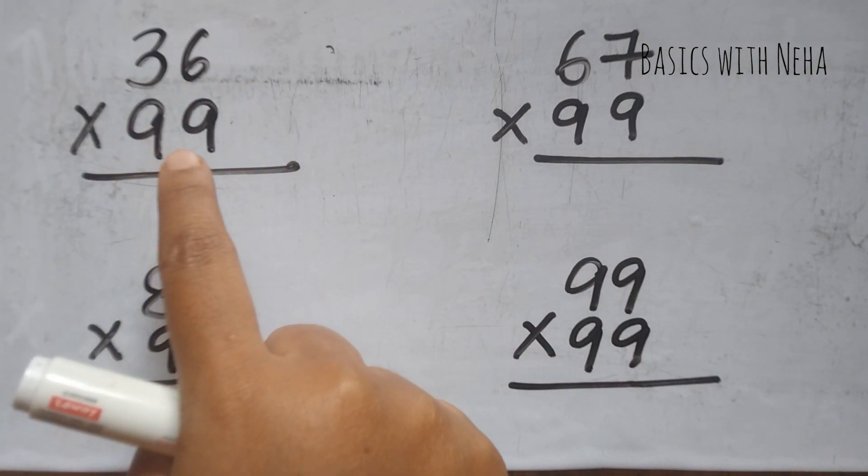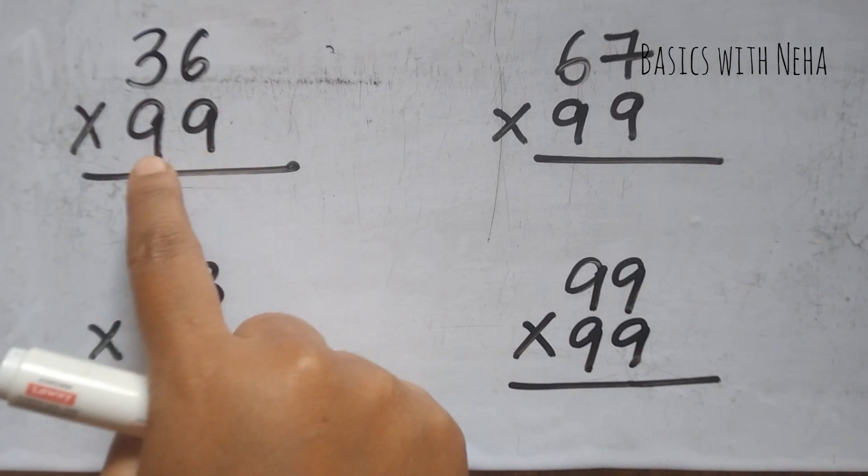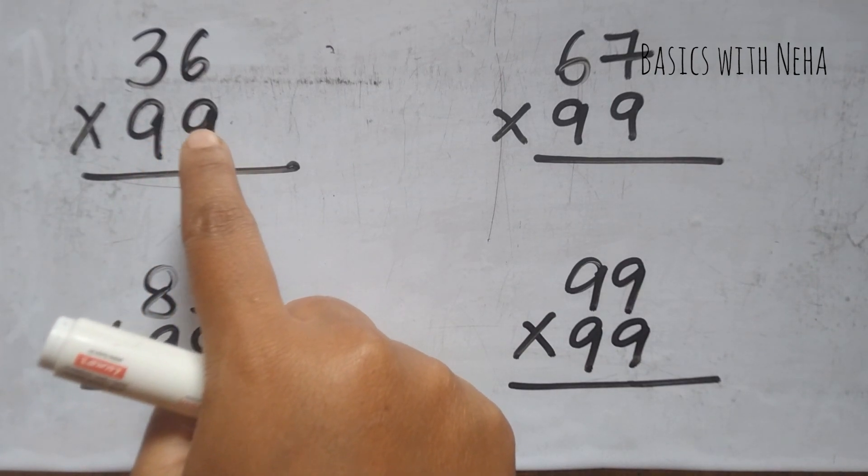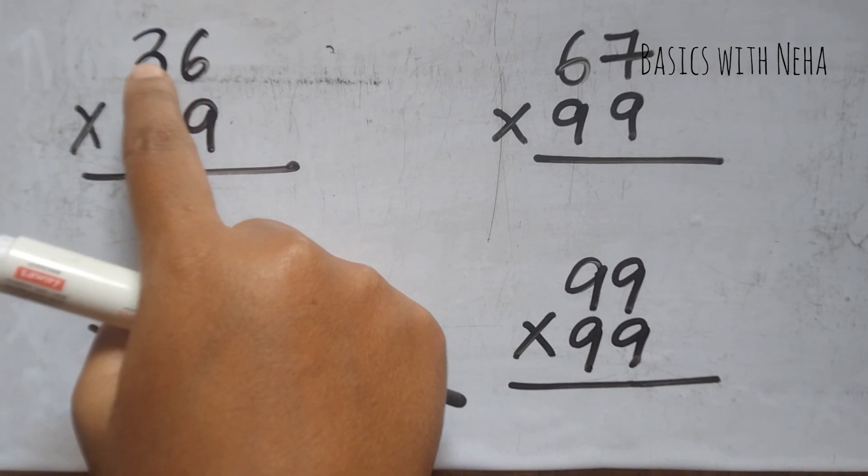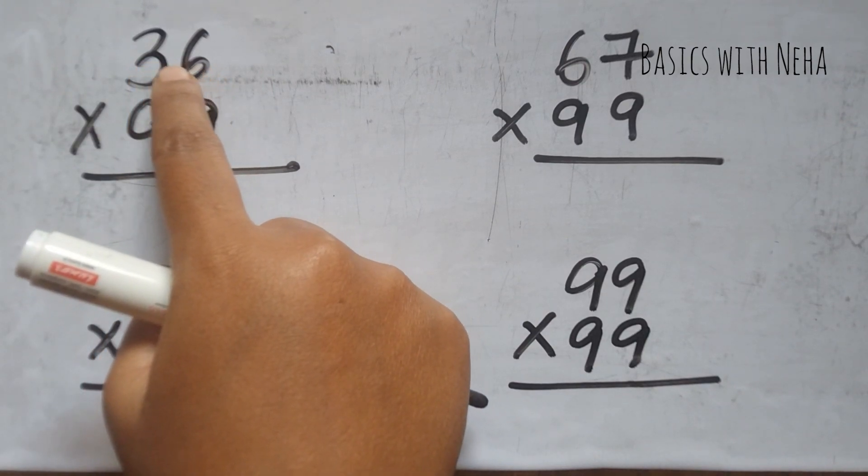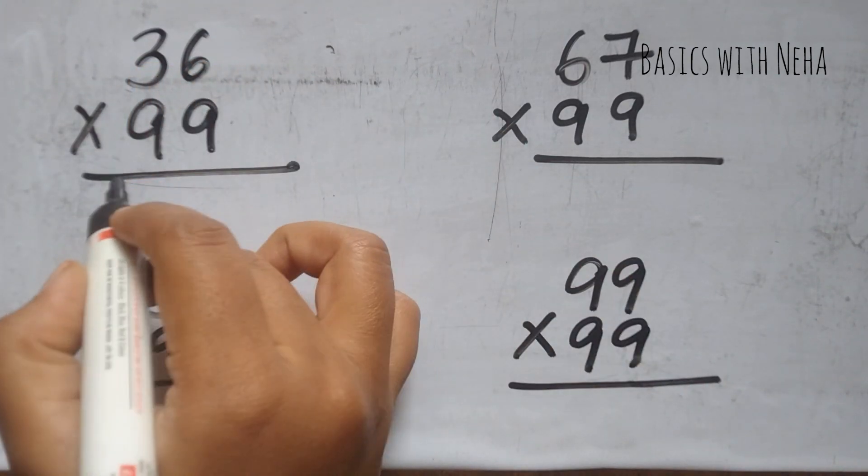36 into 99. We should not consider these nines, whether it's a multiplicand or a multiplier. We have to consider only the number and you have to decrease this number by 1. So that becomes 35.